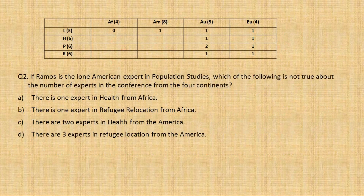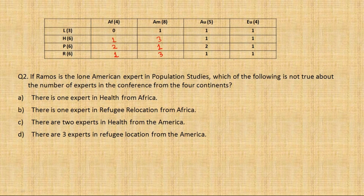Question 2: If Ramos is the lone American expert in population, which of the following is not true? Population having only one for America means the other two America cells - health and refugee - must be 3 and 3 to sum to 8. Checking the fourth option: 'three experts in refugee from America' - that works. Checking the third option: 'two health experts from America' - but health for America is now fixed at 3, not 2. So option C is impossible - that is the answer.